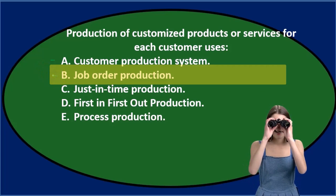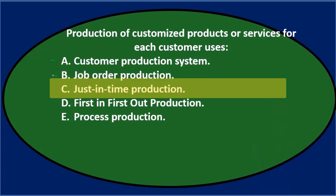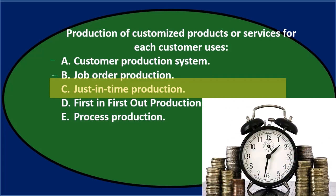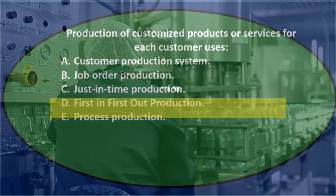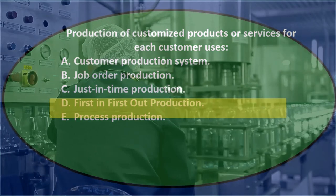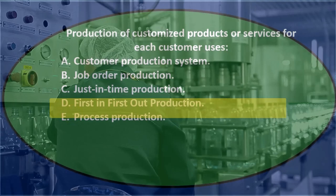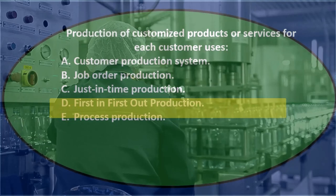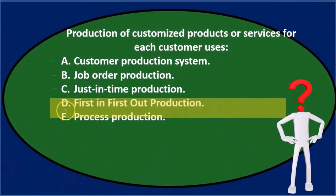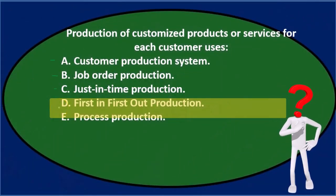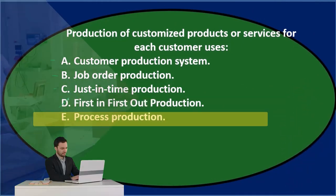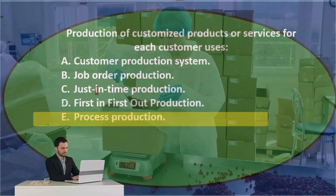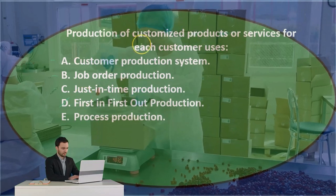Option C — just-in-time production — that's possible, so I'll keep it for now. Option D — first-in-first-out production — that might be the way we track orders, but first-in-first-out usually deals with merchandising companies and how we track costs going in and out. It doesn't usually apply to the job costing system except for the materials portion only, so I don't think it's that. Option E — process production — is probably a process cost system, and it's probably not that because we're doing some customization.